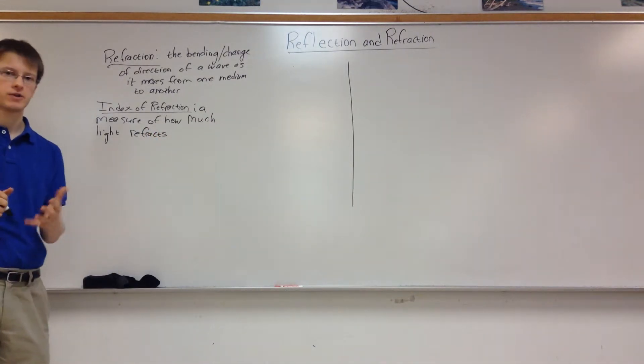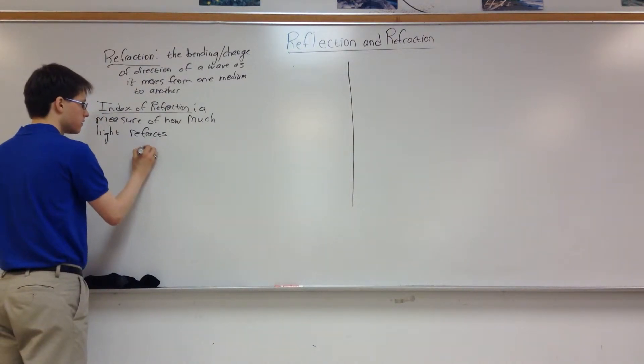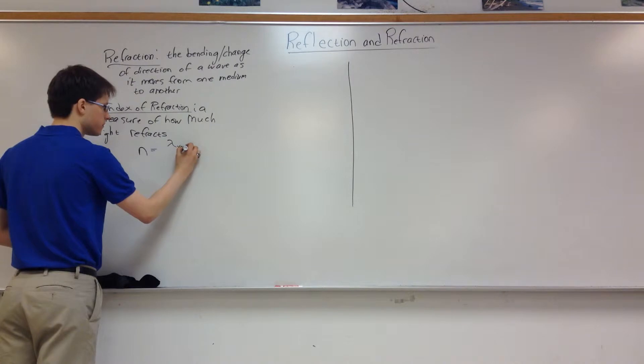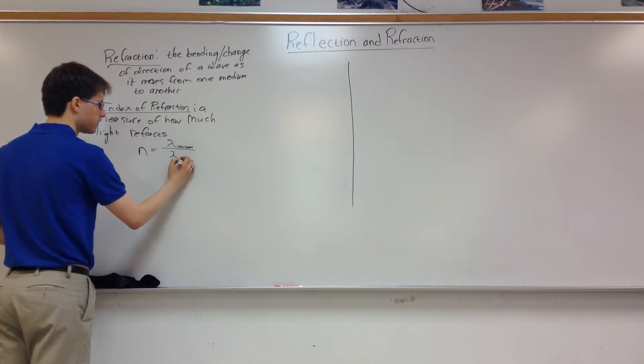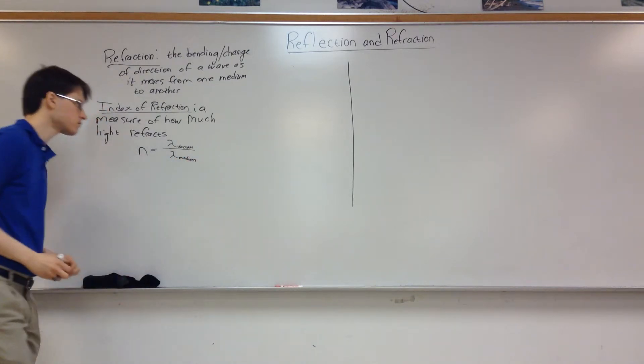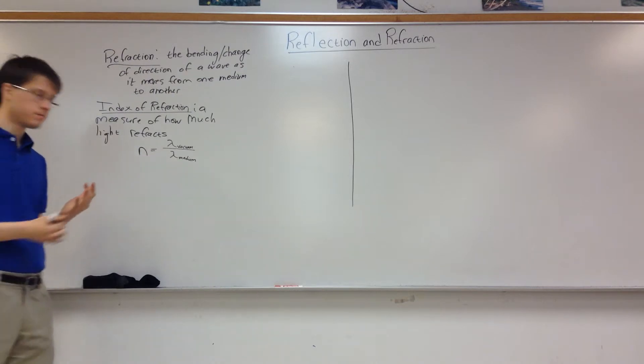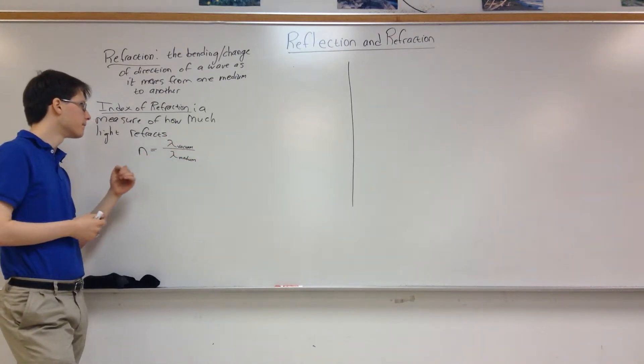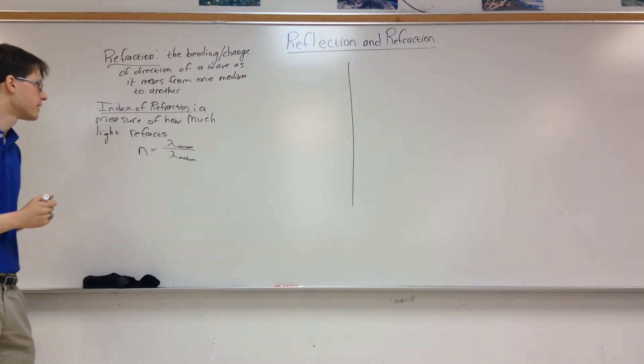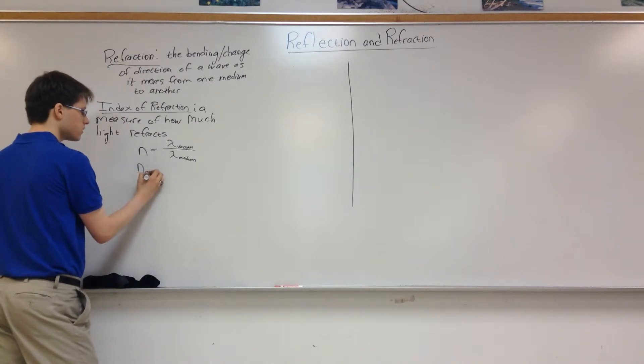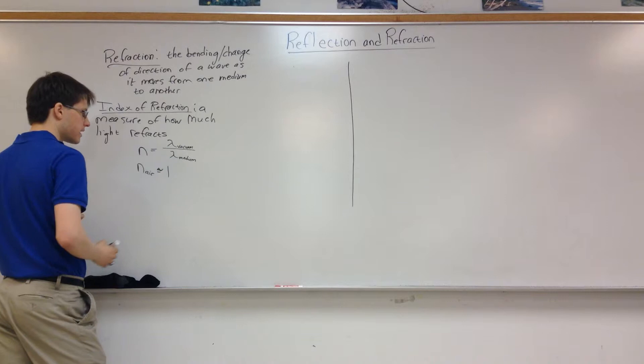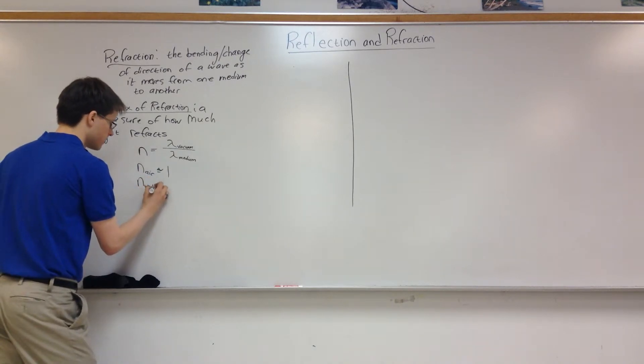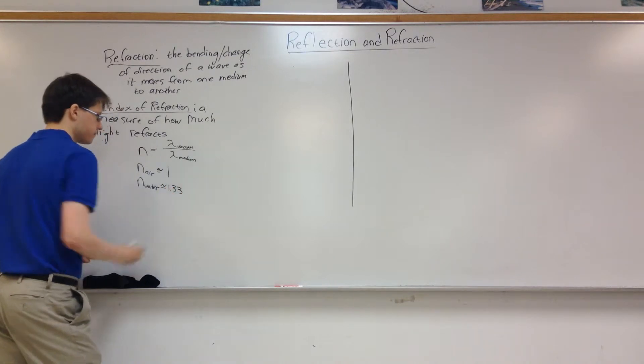So different media have different indices of refraction. The real mathematical definition of this is we use N for index of refraction and it's going to be equal to the wavelength of the light in the vacuum divided by the wavelength of light in the medium. So if it's traveling through a vacuum then this is going to be equal to one. But most other substances do not have an index of refraction of one. The two we're going to see the most are air, which we actually can approximate as one because it's actually 1.0002, and then water has an index of refraction of 1.33.